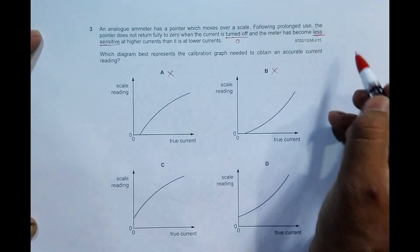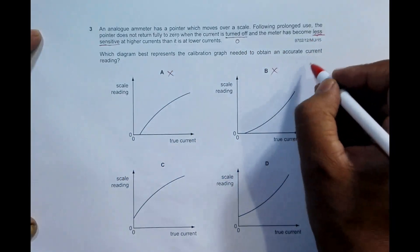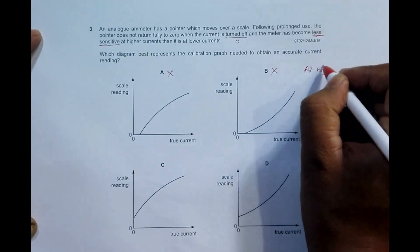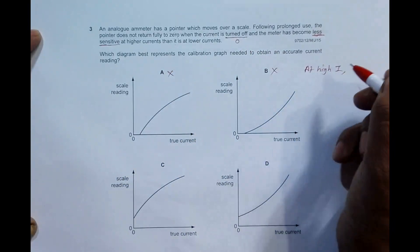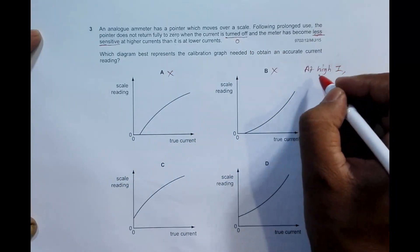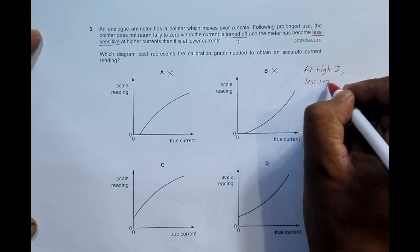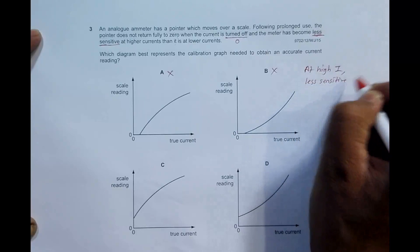Now the second point: the meter has become less sensitive at higher currents. That means at high value of current, the meter is less sensitive. Less sensitive means that at high currents it will show less change.